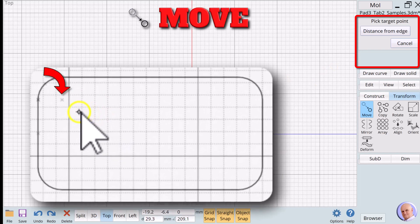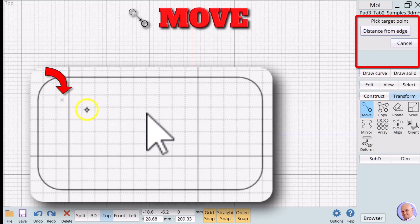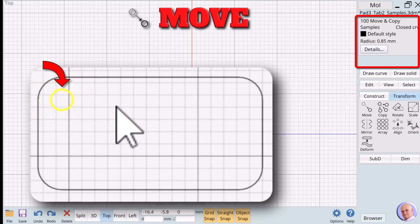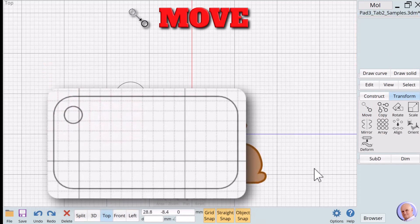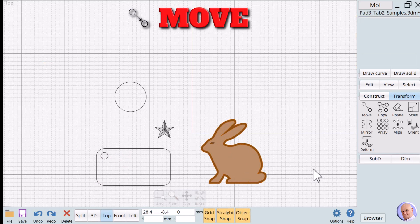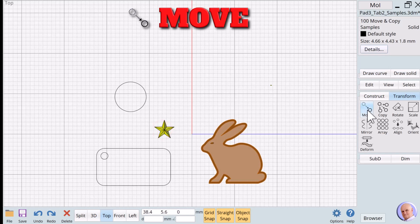The prompt changes to pick target point. Our target will be inside the rectangle. As we move inside the rectangle, more snap points show up. We'll select one of the snap points indicating the center of the rectangle's curved corners. We snap to one of the points, and press the left mouse button to place the moved object precisely. Without detailed comment, we'll move some of the other objects by first clicking on the object, and then clicking on the move verb button.